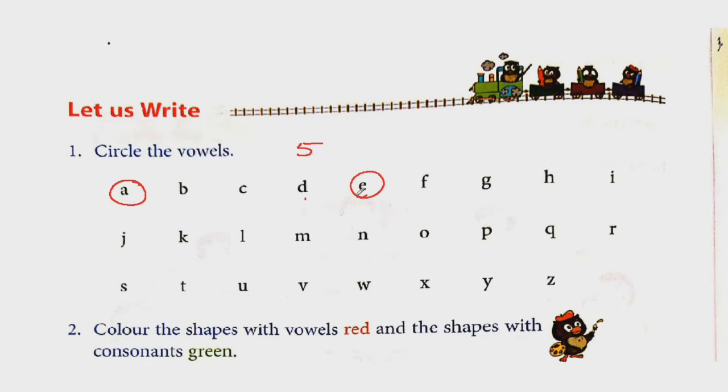Next one, F? No. G? No. H? No. I is a vowel. Next, J, K, L, M, N, O. O is the vowel. And P, Q, R, S, T. Then U. U is also vowel. V, W, X, Y, Z. None of these are vowels. So which are the vowels in these letters? A, E, I, O and U.